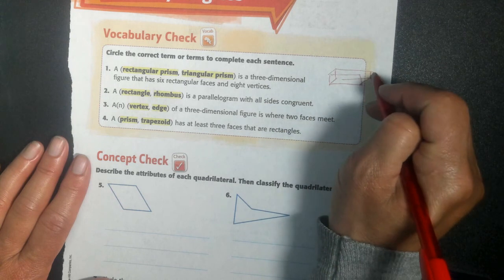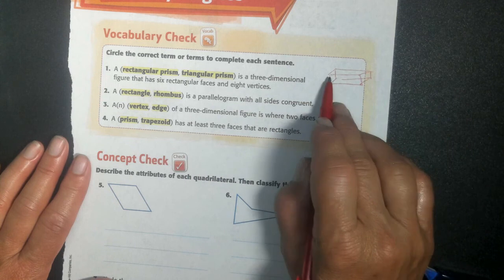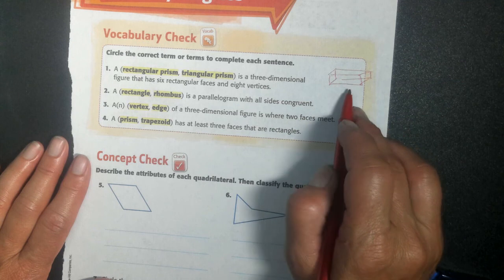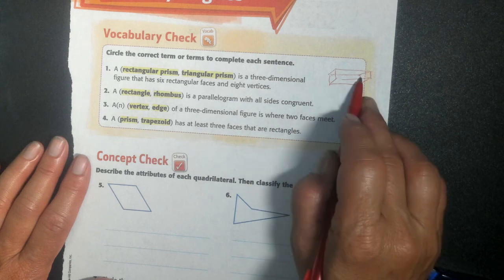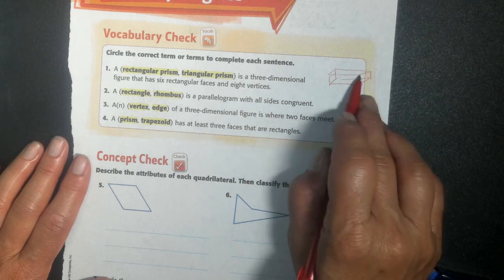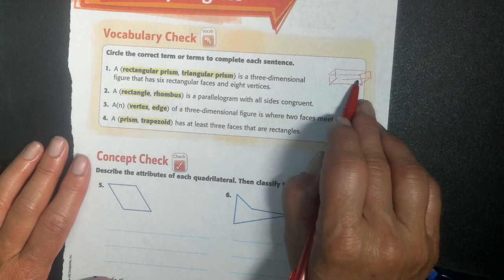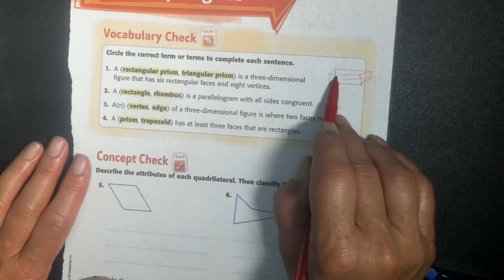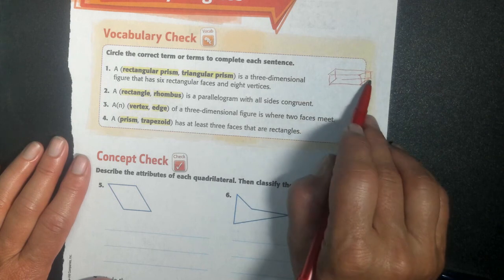Here's my rectangular prism. I have one, two on the end plus one, two on the side. I can't see three and then four on the bottom. So four plus two is six faces. The face is just the flat part. Vertices are the corners. So I'm going to count one, two, three, and the one I can't see in the back, four, five, six, seven, eight.